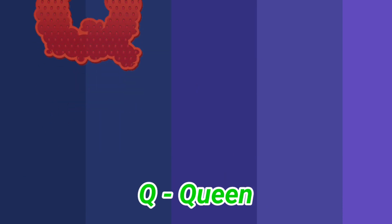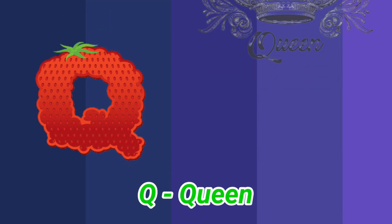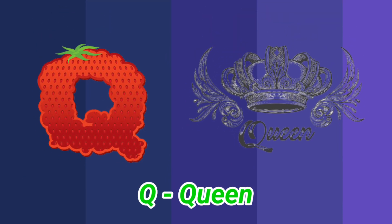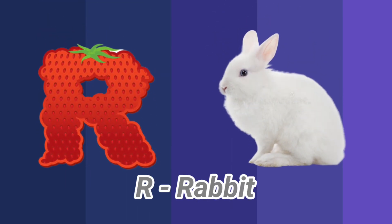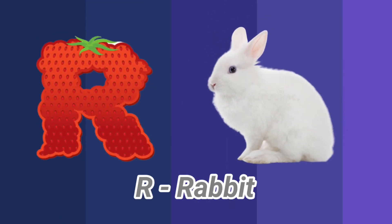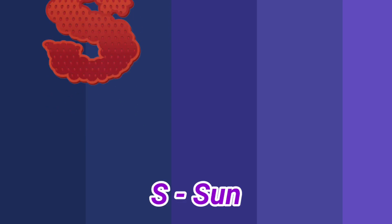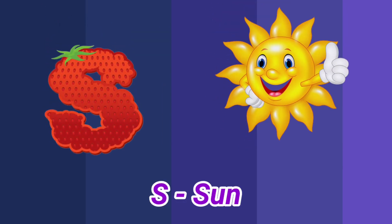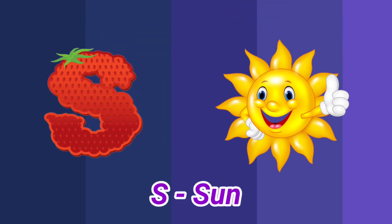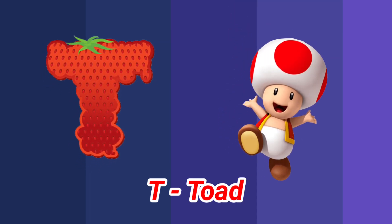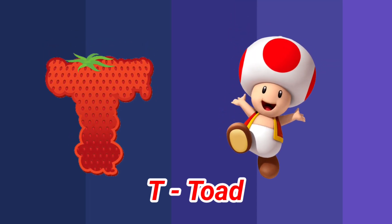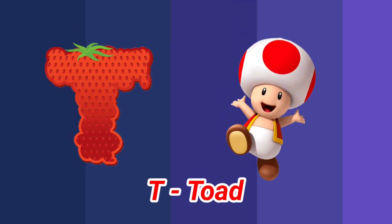Q is for queen, k-k-queen. R is for rabbit, r-r-rabbit. S is for sun, s-s-sun. T is for toad, t-t-toad.